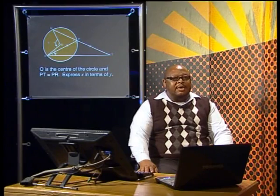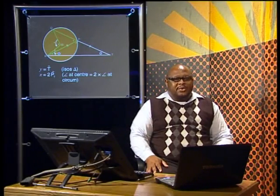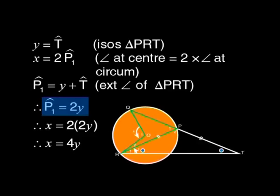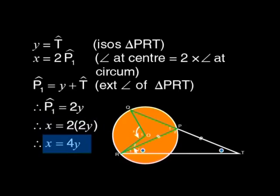Did you see that angle X is double the size of angle P1? It's the angle at the center equal to twice the angle at the circumference. Now can you see a link from angle P1 to angle Y? P1 is the exterior angle of triangle PRT, so it equals angle Y plus angle T. And we've already seen those two angles are equal to each other, so angle P1 is double angle Y. That means angle X is two times double angle Y — in other words, angle X is four times the size of angle Y.